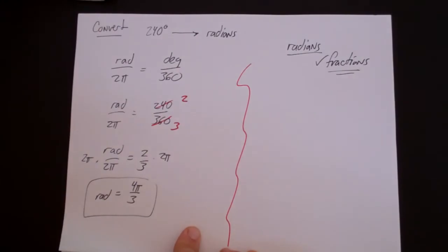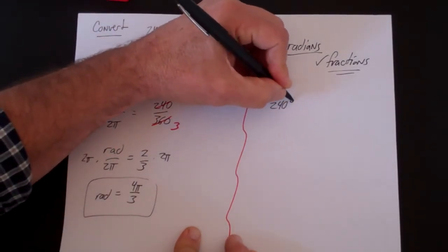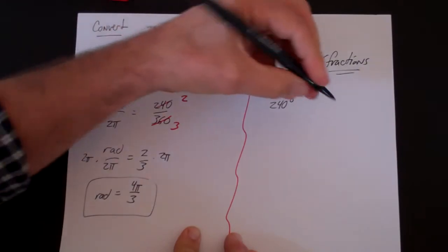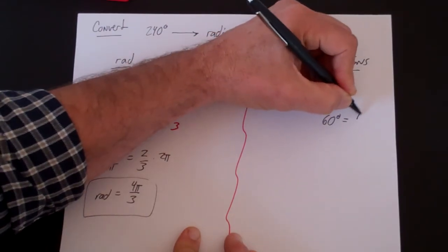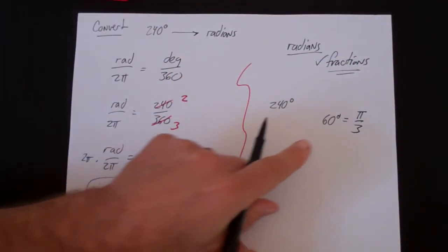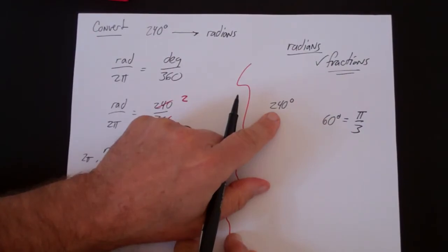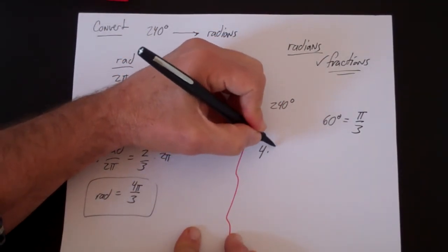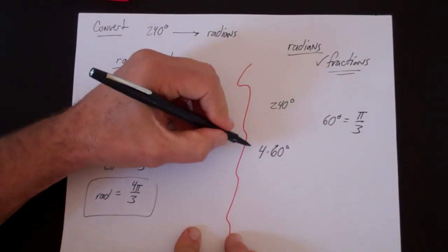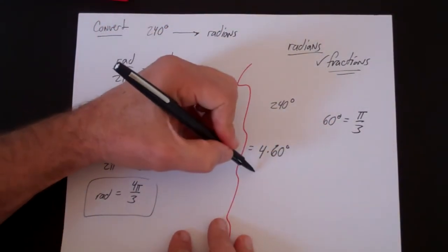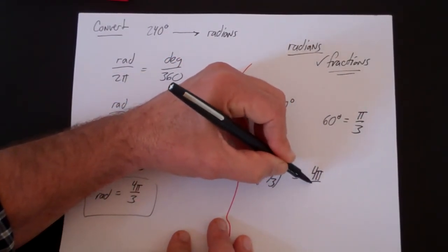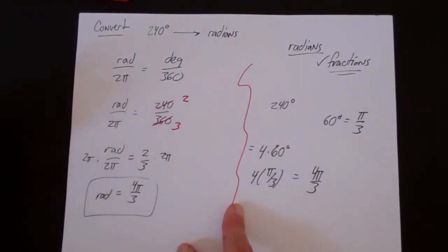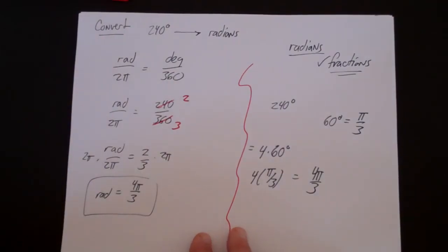There is a shortcut here. I want to convert 240 degrees, and I already memorized that 60 degrees equals pi over 3. Since 240 is 4 times 60, this is a much easier problem. 4 times 60 degrees is 240, and 60 degrees is pi over 3, so it's just 4 times pi over 3, which is 4 pi over 3. Neither method is preferred — you get the same answer both ways. This is how you convert from degrees to radians.